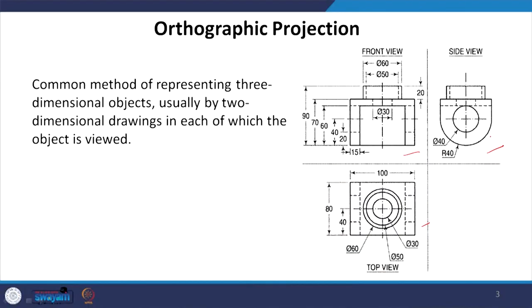For example, take this set of drawings — a front view, a top view, and a side view. It will take us some time to understand what the set of drawings is going to communicate. What is the actual object? We will read it, connect the dimensions, connect the drawings, and then arrive at what the 3D object is. So there is a certain limitation.